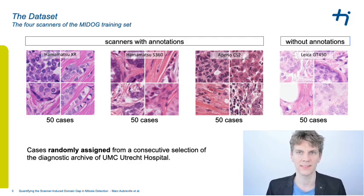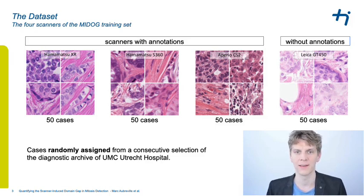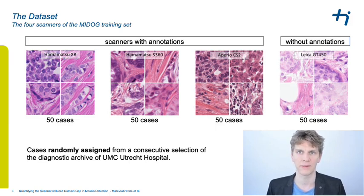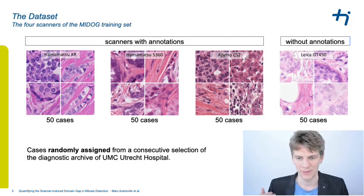We selected 200 cases as part of our training set, each randomly assigned from a consecutive selection of the diagnostic archive of the UMC Utrecht, which is why we believe they should be fairly representative of actual cases. As you can see, there is quite a strong difference in visual appearance just based on the scanner used — keep in mind these were all taken from the same archive and the same year span.